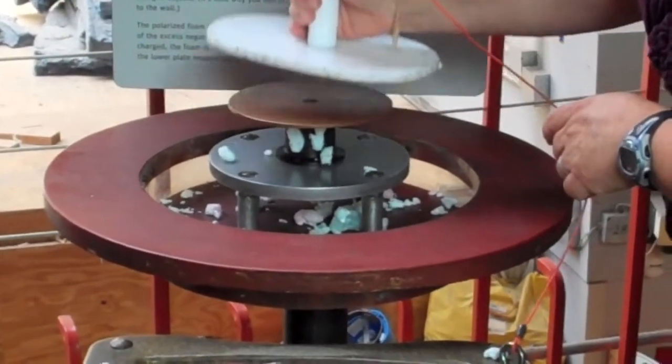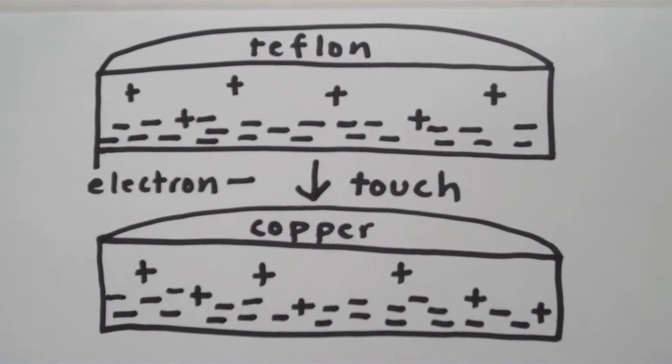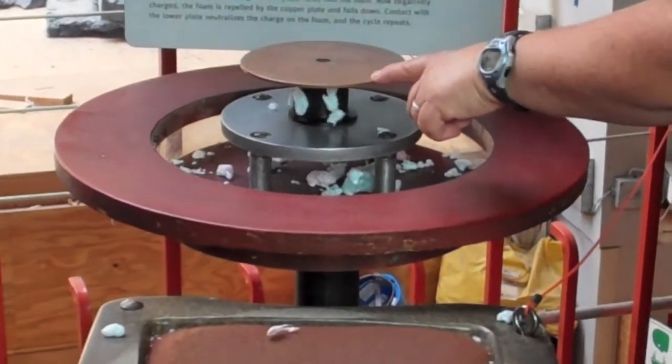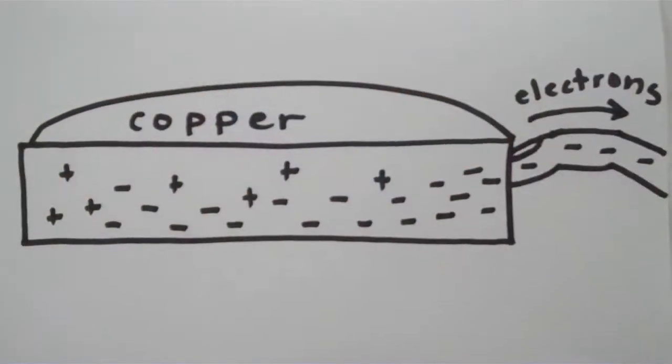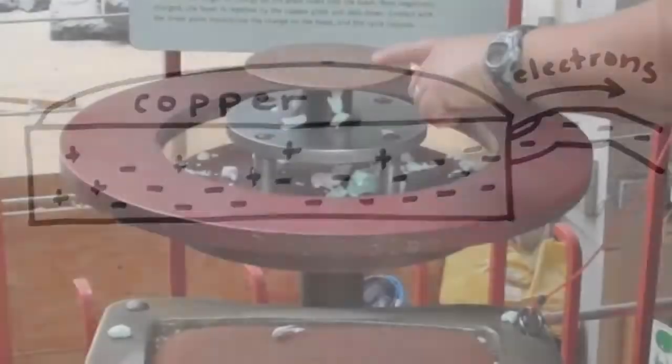When I actually touch the Teflon onto the copper, the electrons from the Teflon will jump to the copper, recharging the copper. Then when I place my finger on the copper plate, the electrons flow from the copper plate through my finger and into the ground, releasing those extra electrons.